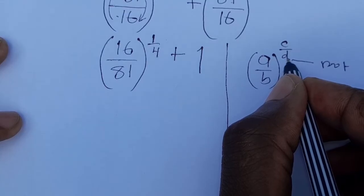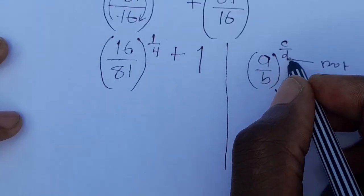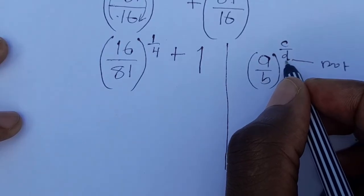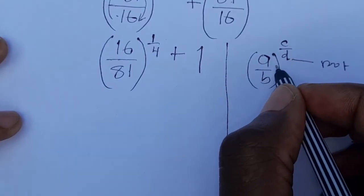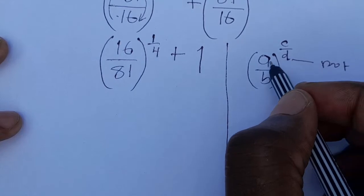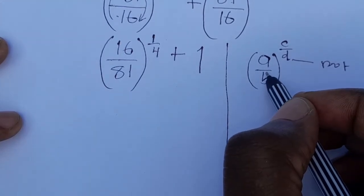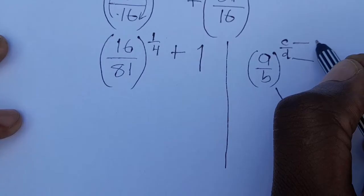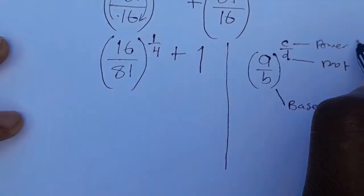And this number is called the root. So if this is a 2, if d is a 2, it means you are being asked to find the square root of this number here. If this is a 3 it means you are being asked to find the cube root of this number. And if it's a 4 it means you are being asked to find the fourth root of this number.